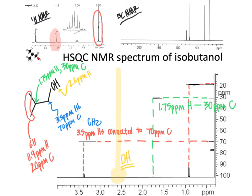In the next video, we will look at interpretation of the HMBC experiment — heteronuclear multiple bond correlation — which gives us information about which protons are two to three bonds away from which carbon atoms. Rather than looking at directly connected hydrogens and carbons, we will examine longer-range interactions between protons and carbons in these 2D NMR experiments.